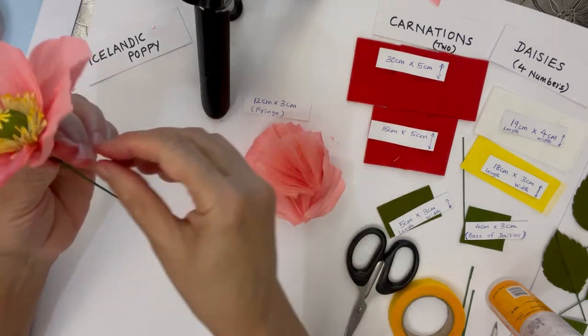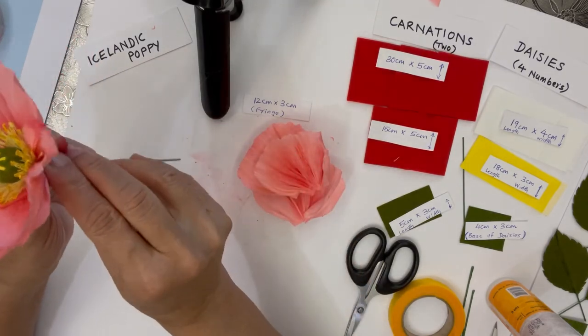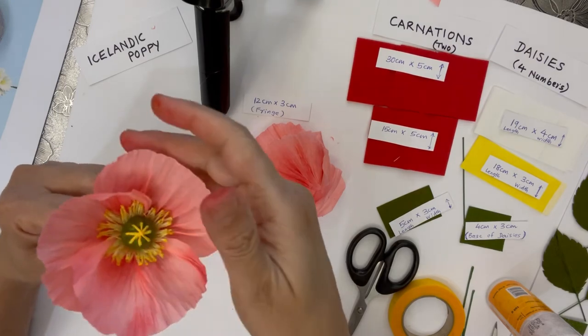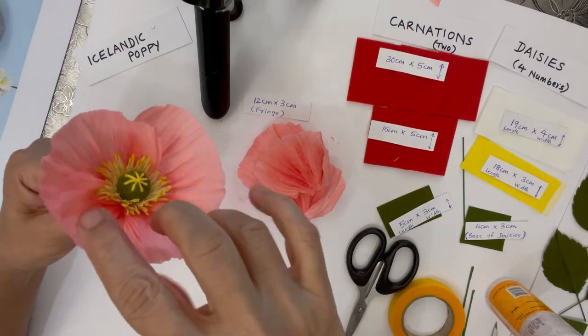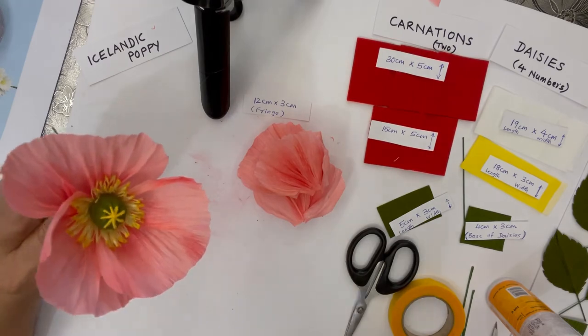You can either use two in each layer, which means four petals for Icelandic poppy, or you can use six petals.